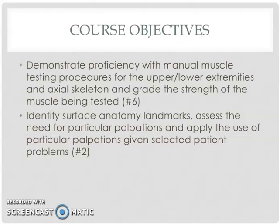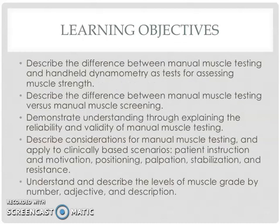Looking at the course objectives, this term we're going to learn all of the procedures for manual muscle testing of the upper and lower extremities. We will also do quite a bit of work on surface anatomy landmarks. Our learning objectives will be to discuss the differences between a manual muscle test and a strength screen, reliability and validity of manual muscle testing, when and how to use a manual muscle test, the specific standardized procedures which relate to reliability and validity, and the different muscle grades and how to assign those.